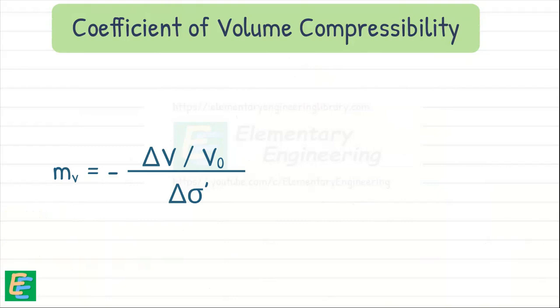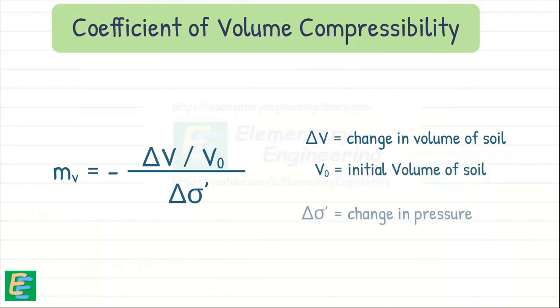Here, delta V is the change in volume of soil, V0 is the initial volume of soil, and delta sigma prime is the change in pressure on the soil.